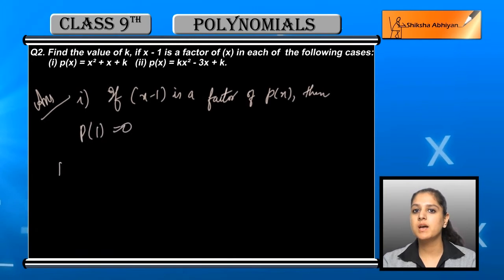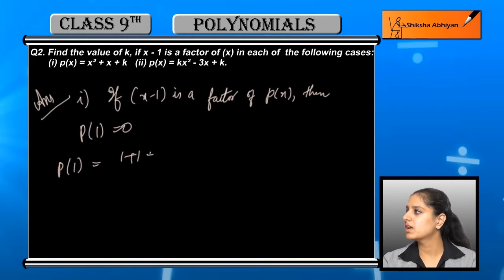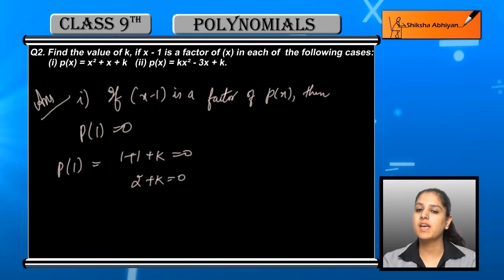p(1) equals 1 plus 1 plus k, which equals 0. So 2 plus k equals 0, giving us k equals minus 2. In this case, when x minus 1 is the factor, k is minus 2.